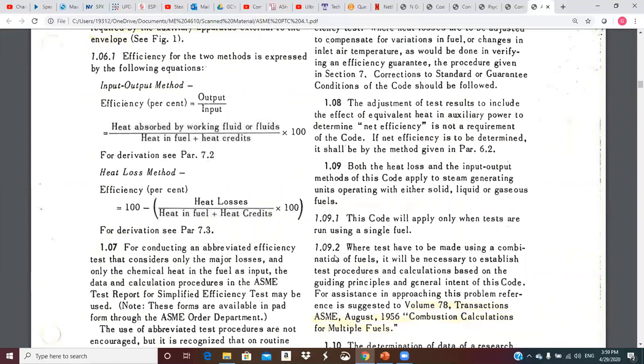Efficiency for two methods is expressed by the following equation. So we actually have two methods of efficiency determination. One is what's called the input-output method. And efficiency is output divided by input, common sense definition that you all know. And output is described as heat absorbed by working fluid or fluids. And then the input is the heat in the fuel, the chemical energy in the fuel, plus heat credits. And credits are other energy types that enter the control volume of the boiler.